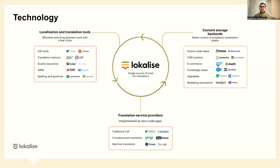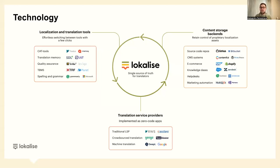The ecosystem also includes content storage backends, source code repositories, CMS systems — headless or otherwise — e-commerce platforms, knowledge bases, help desks, and marketing automation tools for emails and campaigns. For translation service providers, you can work with traditional LSPs like RWS or Clara, who integrate with the single source of truth, or use a marketplace of crowdsourced translators like Gengo. Machine translation integration is also available for pre-translating content.